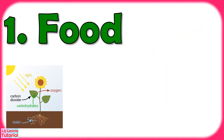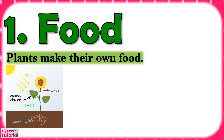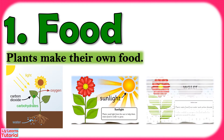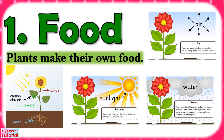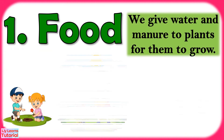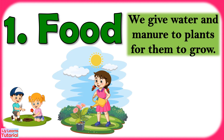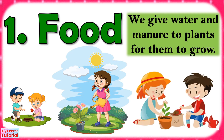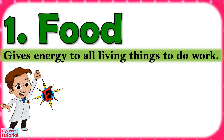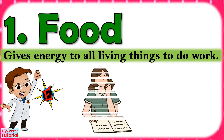Plants are very special because they can make their own food. They use sunlight, water, and carbon dioxide to make their own food. We give water and manure to plants for them to grow. Food gives energy to all living things to do work.